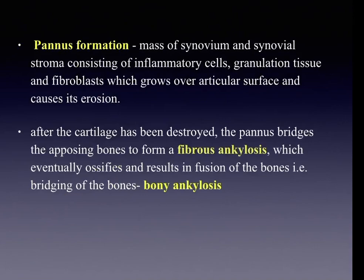A key morphologic finding is pannus formation — a mass of synovium and synovial stroma consisting of inflammatory cells, granulation tissue, and fibroblasts, which grows over the articular surface causing erosion. Once articular cartilage is destroyed, the pannus bridges opposing bones, forming fibrous ankylosis. This fibrous tissue can become ossified, resulting in fusion of the bones — bony ankylosis.